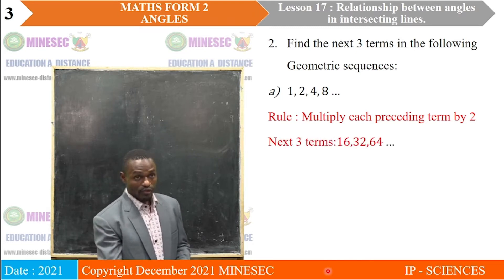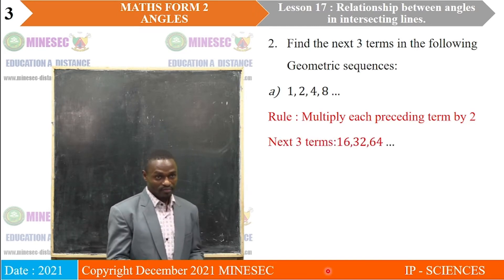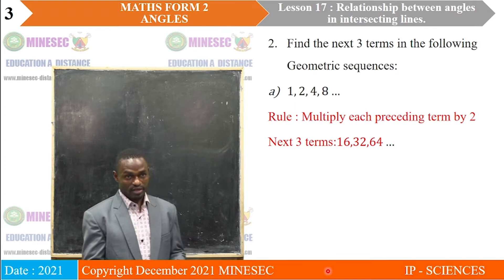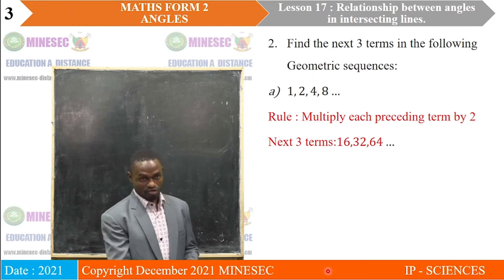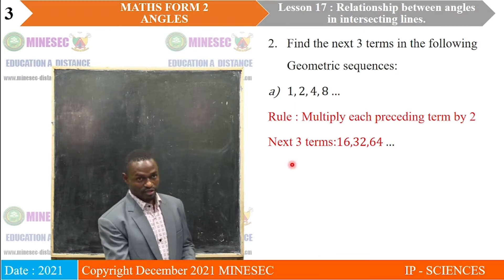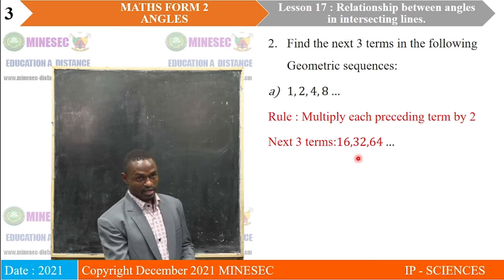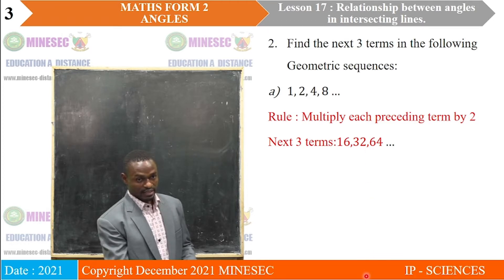The next three terms will be: 8 times 2, which gives 16; 16 times 2, you obtain 32; and 32 times 2, you obtain 64. So those are the next three terms.